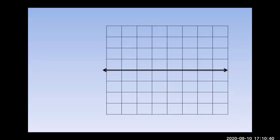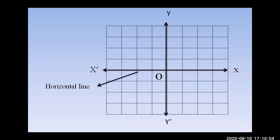This is a graph paper. We have a horizontal line called the x-axis (XOX prime) and a vertical line called the y-axis (YOY prime). We will plot two points A and B on this graph paper.